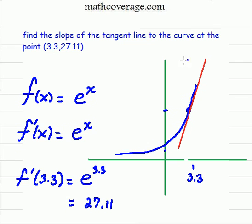Now, in the problem up here, it says that this point actually is a point on the graph, (3.3, 27.11). So how in the world is it that when we took 3.3 and plugged it into the derivative, it actually turns out to be the slope of this tangent line?